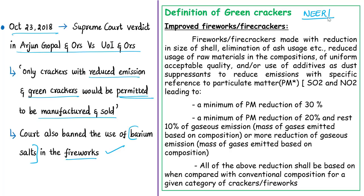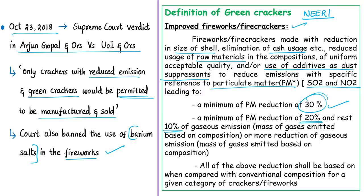Green crackers are defined by the National Environment Engineering Research Institute (NEERI), a constituent laboratory of CSIR. Also called improved fireworks, these are crackers with reduced shell size compared to conventional crackers, with elimination of ash usage, reduced raw materials, and possible use of additives as dust suppressants to reduce emissions. These crackers should result in a minimum 30% reduction in particulate matter pollution compared to conventional crackers, and a minimum 20% PM reduction plus 10% reduction in gaseous emissions.